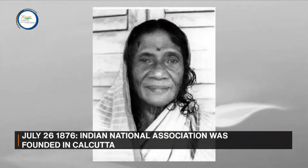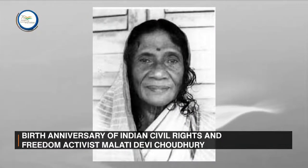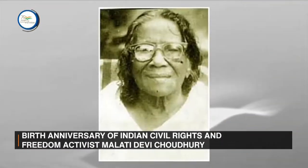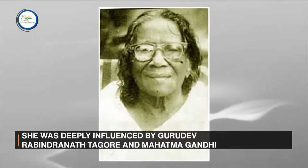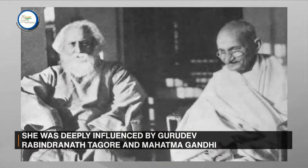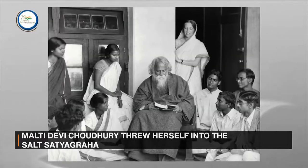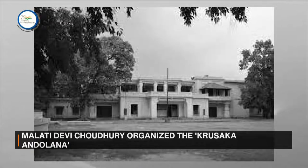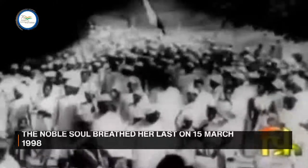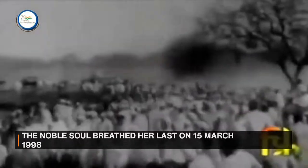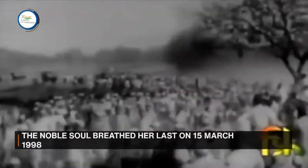We remember Malte Devi Chaudhary, an Indian civil rights and freedom activist born on the 26th of July, 1904. She was deeply influenced by both Gurudev Rabindranath Tagore and Mahatma Gandhi. While studying at Shantiniketan, she met her future husband and they both relocated to present-day Odisha. The Salt Satyagraha started soon after, and Malte Devi Chaudhary threw herself into the movement.